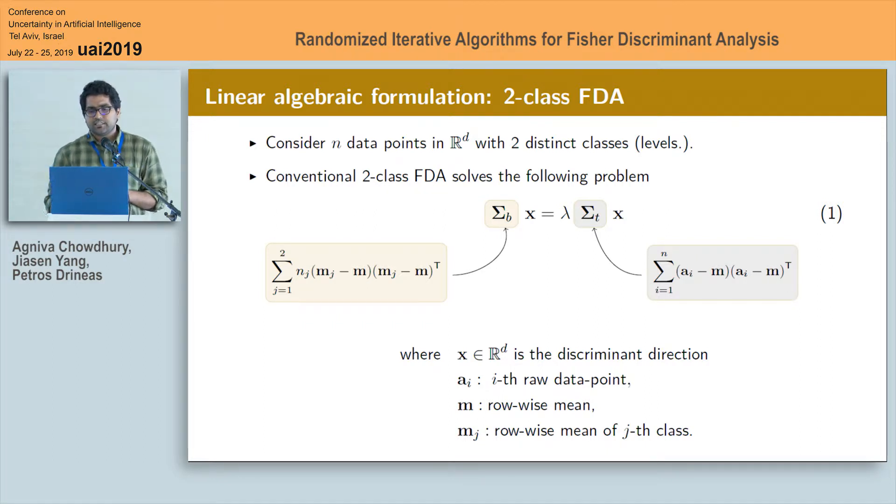and it turns out that this particular optimization problem boils down to a generalized eigen problem of equation 1 where X is the discriminant vector we are interested in. But now in D dimension, lambda is a non-negative scalar, sigma B and sigma T are respectively the between class scatter matrix and the total scatter matrix of order D by D which are defined on the slide, where M is the row-wise grand mean of the data, NJ is the size of the Jth class and MJ is the row-wise mean of the Jth class.